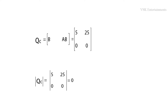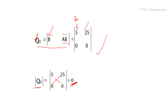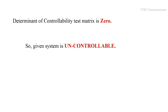With QC = [[5, 25], [0, 0]], we find the determinant: (5×0) - (0×25) = 0. The determinant of the controllability test matrix is 0, so we can conclude that the given system is a non-controllable (uncontrollable) system. This is because the determinant of the controllability test matrix equals zero.